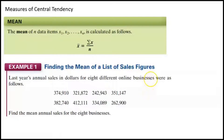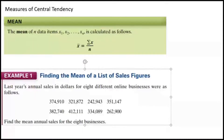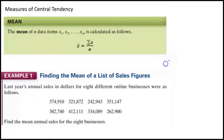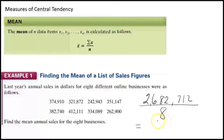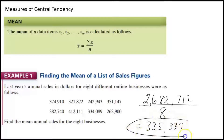When I added up all eight of those values — that's a lot to add up — I got two million, six hundred eighty-two thousand, seven hundred twelve. I need to divide that by eight. When I do, I get three hundred thirty-five thousand, three hundred thirty-nine.